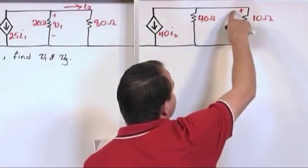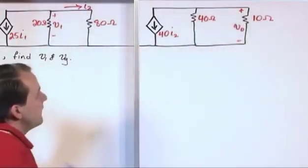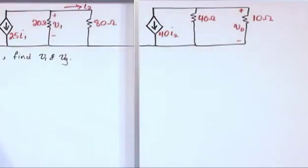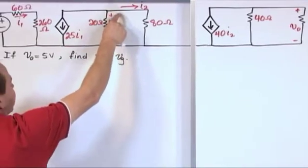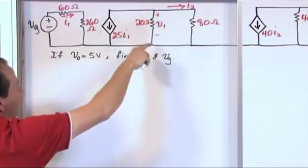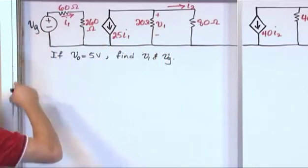We also have V sub zero over here and the problem is if you're given that V naught, which is that voltage way over at the end there is five volts, then what you want to do is find V sub one which is this voltage labeled here in this direction and V sub G which is the source voltage.